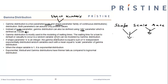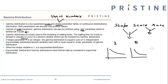Gamma distribution is mostly used in modeling of waiting times. The waiting time could be the time for a loan to default or a particular event to occur. Another way of looking at gamma distribution is that it is the sum of exponential distributions. For instance, a gamma distribution with shape parameter equal to 3 and scale parameter equal to theta is nothing but equal to the sum of three exponentially distributed random variables, each with a mean equal to theta.